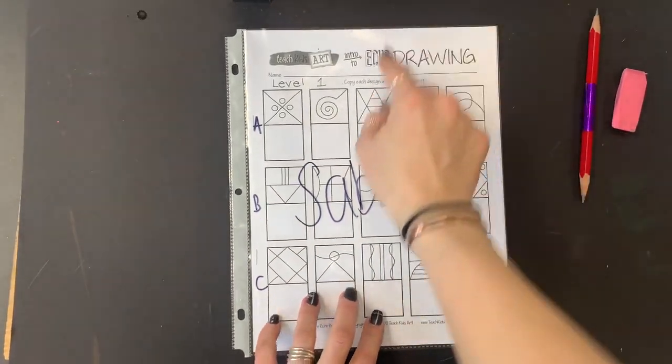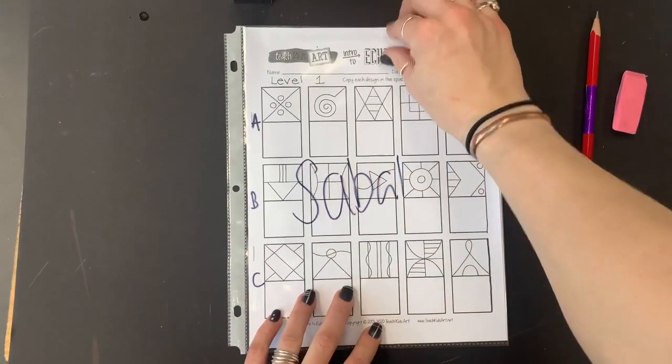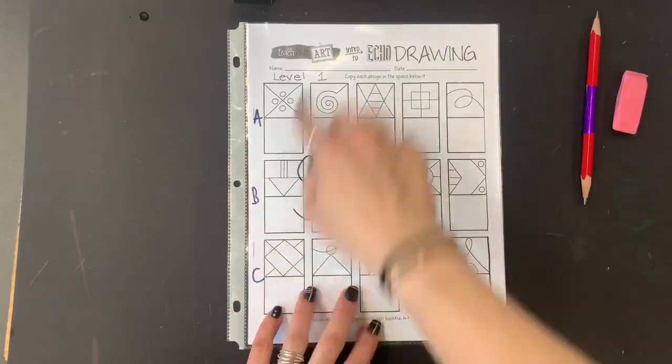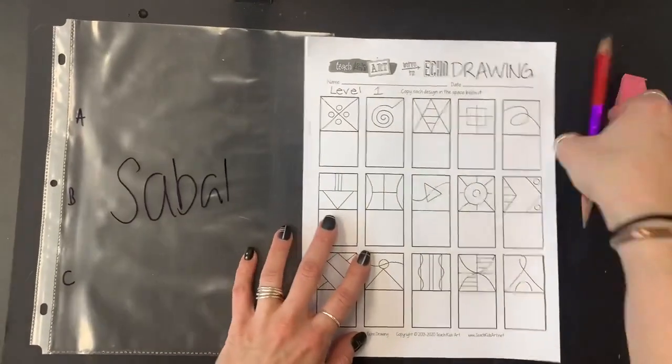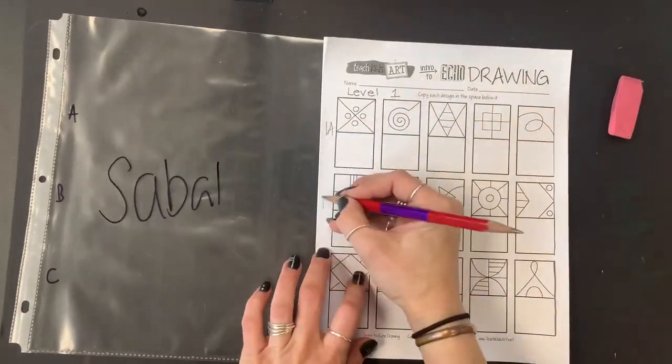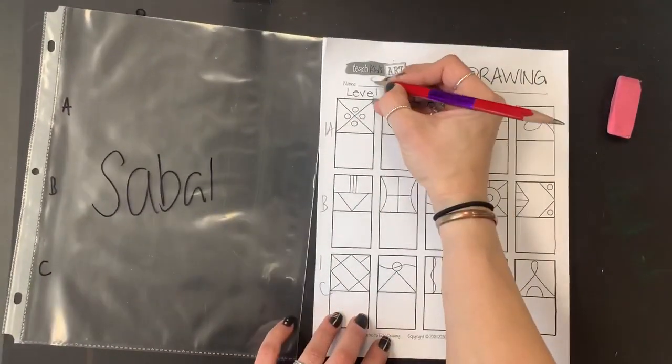You're going to take out your packet and see how it says A, B, and C. You're going to take this out and you're going to write A, B, and C and your name.